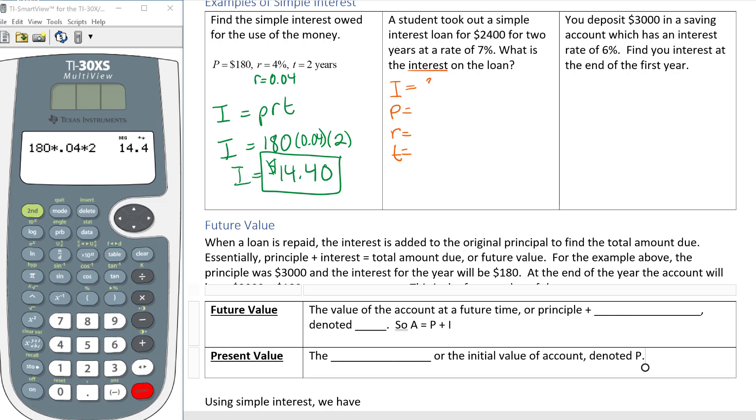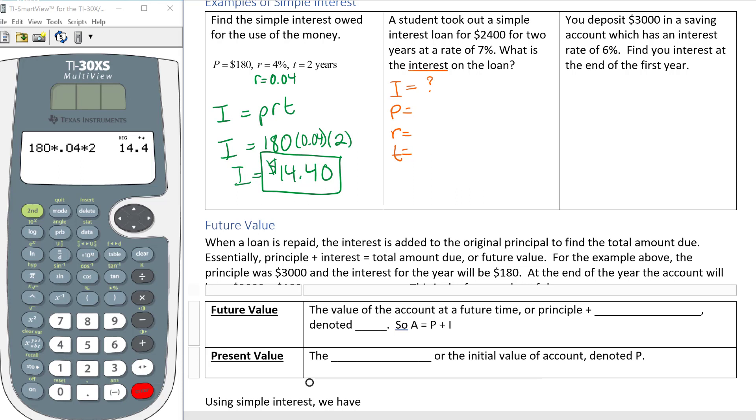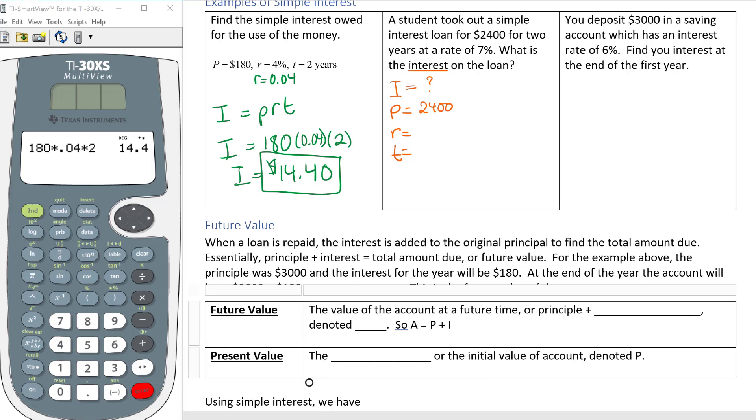It says what is the interest? So we don't know what the interest is, I'm going to put a little question mark next to the I. P is the principal, that's how much we started with, so I'm borrowing $2400. My R is the rate which is 7%, written as a decimal that's 0.07. And the time in years is 2 years. It's a little tricky because it's written out in English and you don't actually see the number there but that is your number.